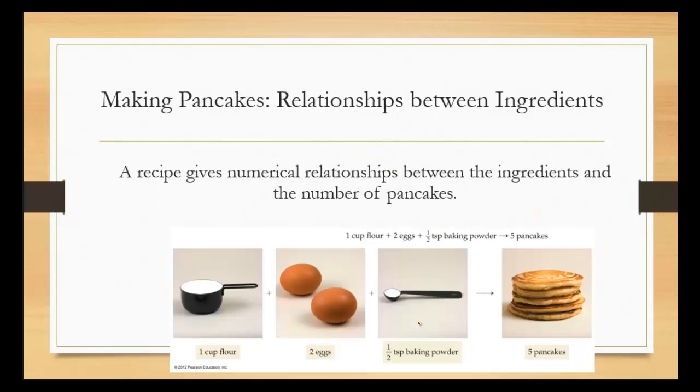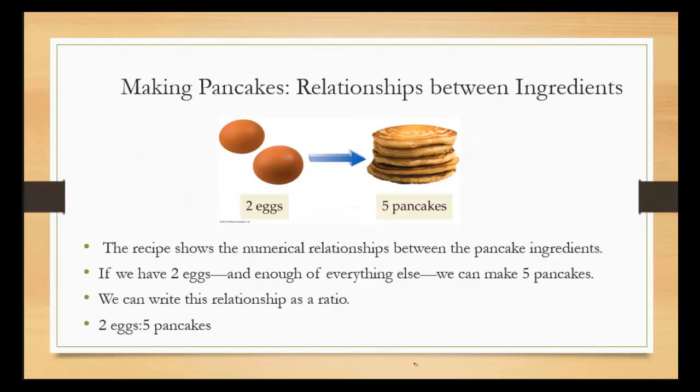It's very similar to a recipe. Let's say you're trying to make pancakes. We need one cup of flour, two eggs, and a half teaspoon of baking powder to make five pancakes. That's very similar to a chemical equation. The recipe shows a numerical relationship between the pancake ingredients and what we come out with, the reactants and the products.